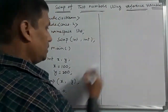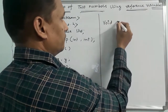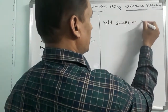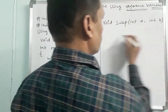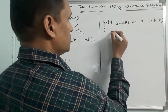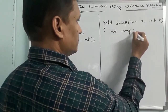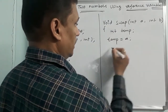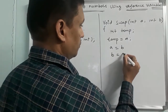So, the function definition is defined. For example, int a, int b. The logic is written first. In the logic, a temporary variable is called temp. For interchange: temp equals a, a equals b, b equals temp.